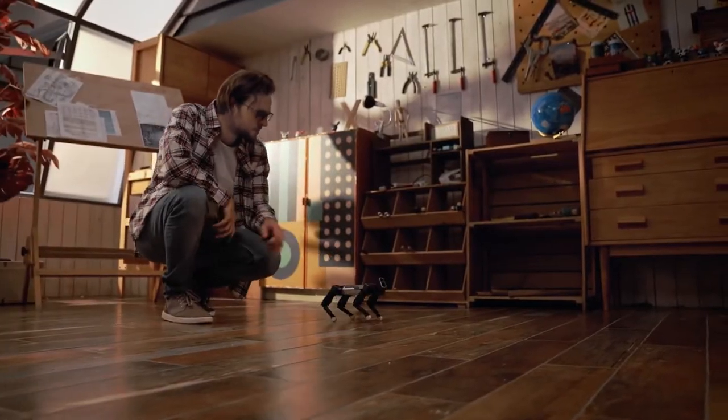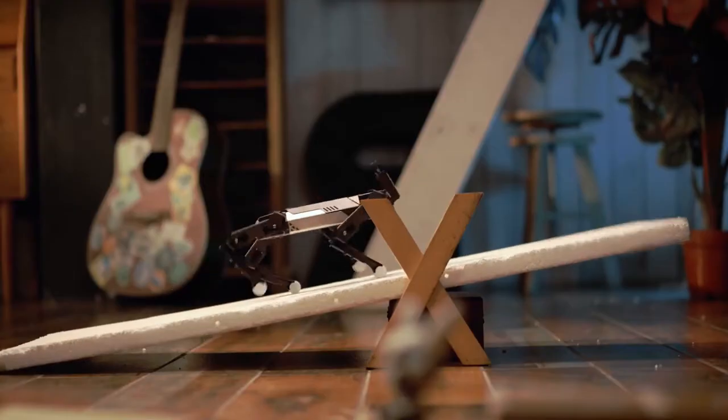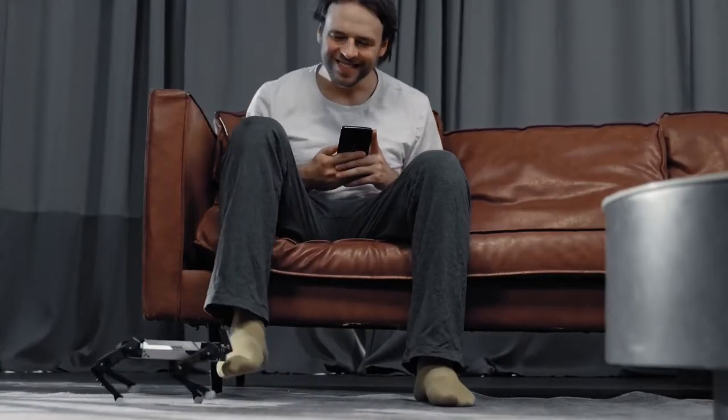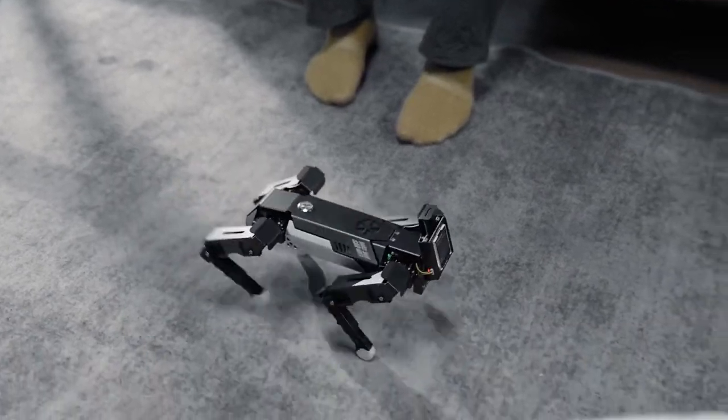EXCO comes with a 9-axis IMU that adapts to ground tilting and keeps the body balanced, resists external interference, and maintains the direction of motion.